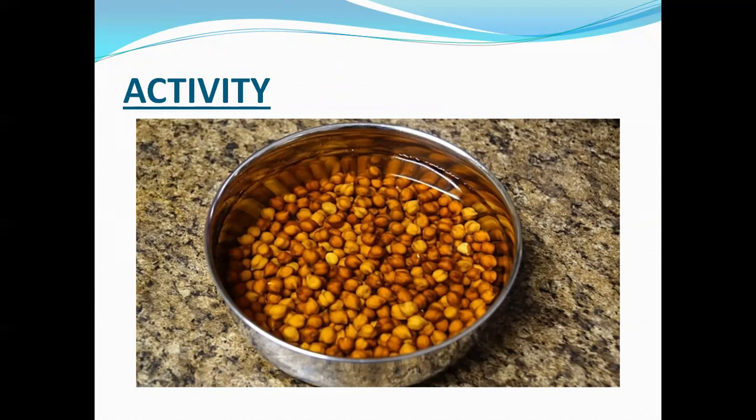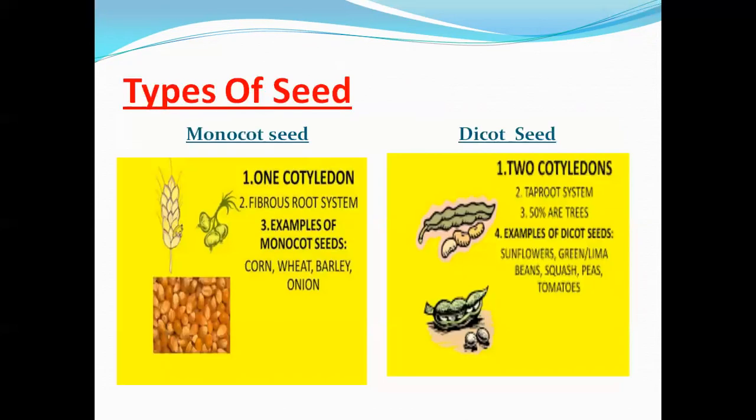As discussed earlier, cotyledons store food for the baby plant. Some seeds have one cotyledon and some seeds have two cotyledons. On the basis of this, we have two types of seeds. One is the monocot seed — if a plant has one cotyledon, it is known as a monocot plant and the seed is known as a monocot seed. These plants have a fibrous root system. Maize, rice, wheat, and barley are examples of monocot seeds. The second type is the dicot seed — if a plant has two cotyledons, it is known as a dicot plant and the seed is known as a dicot seed. These plants have a tap root system. Gram, pea, and beans are examples of dicot seeds.